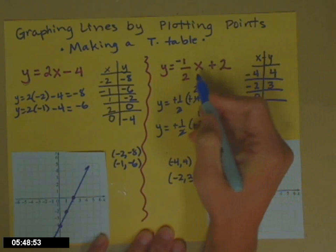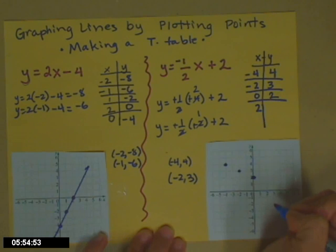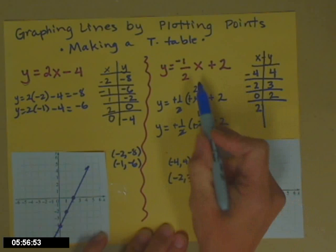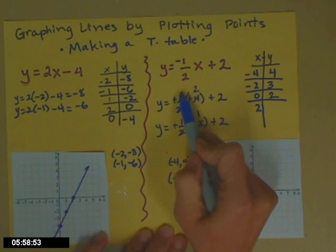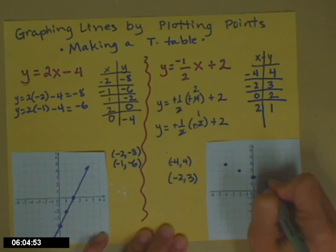If x is 0, wipes out that whole fraction. Y value is 2. And if x is 2, let's do it in our heads. The 2's cancel. I'm left with a negative 1 plus 2 is a positive 1.